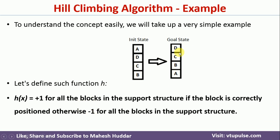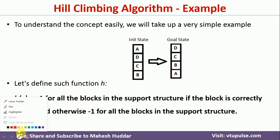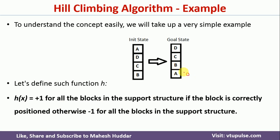Looking at the goal state, all blocks are placed correctly. A has no support structure so its value is 0. B has A as its support structure placed correctly, so we get plus 1. Below C there are two blocks both placed correctly, so we get 2. Below D there are three blocks all placed correctly, giving a total heuristic value of 6 for the goal state.